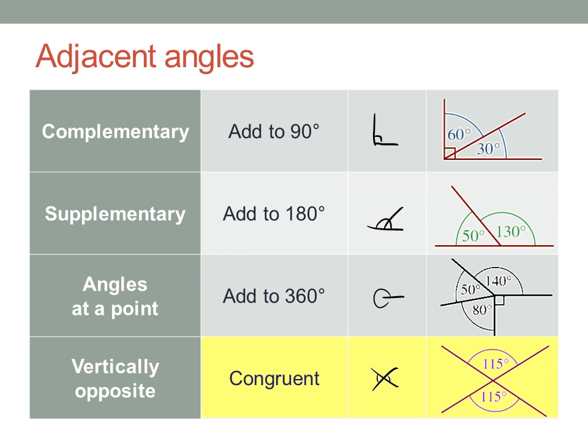Vertically opposite angles are congruent. Where two lines intersect at a point, the angles opposite each other at that point must be the same size. They're congruent.